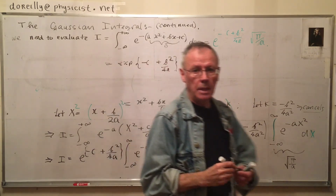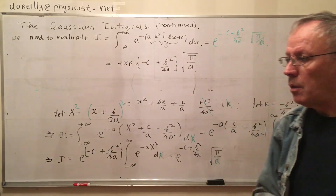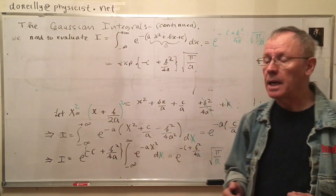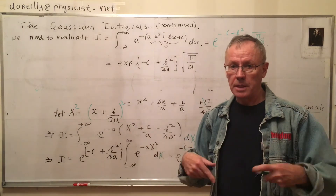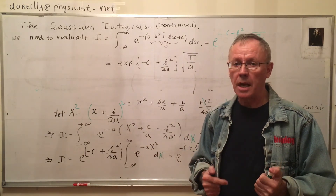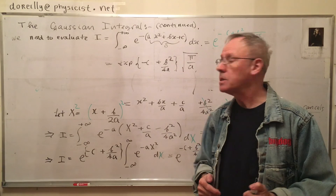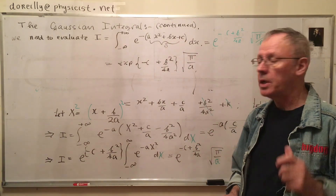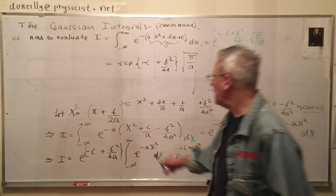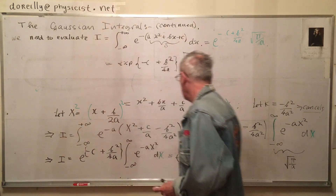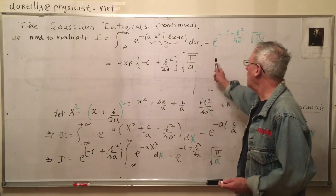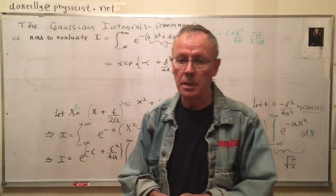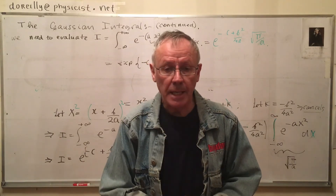And that's the answer — that's what we were looking for. So to summarize: first I did the basic Gaussian case with b and c equal to zero; then I showed differentiating under the integral sign to get integrals with an x squared prefix; then I let capital X equal x plus b over 2a, completed the square, and arrived at this general result. It's very neat, very fundamental, and crops up a lot in physics in many different aspects.